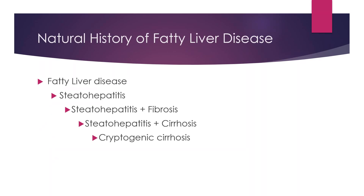The natural history of fatty liver disease starts out as a fatty liver, moves to steatohepatitis, which is inflammation of the liver. Then you move to inflammation plus scarring, which is fibrosis. Then you move from fatty liver or inflammation to cirrhosis, and then to cryptogenic cirrhosis where the liver has cirrhosis and you really can't tell what the reason is for that disease.